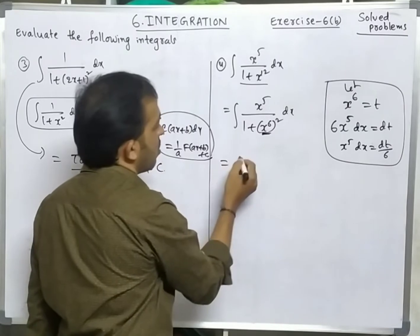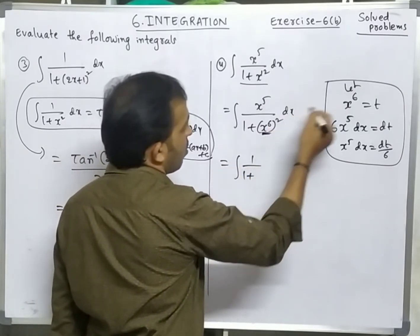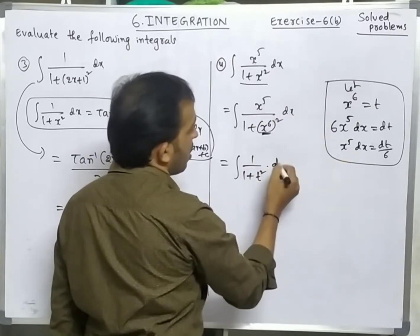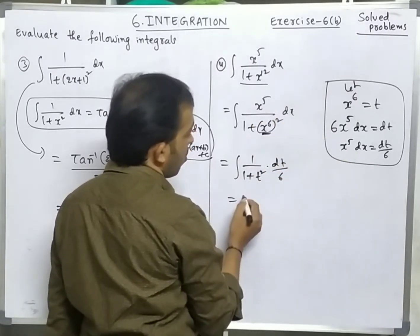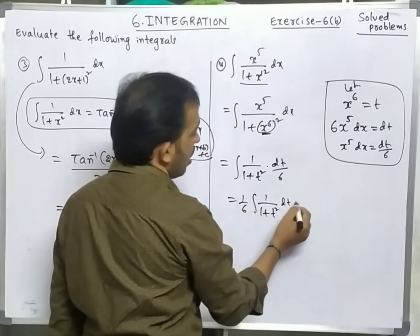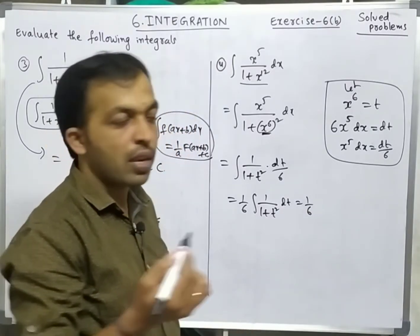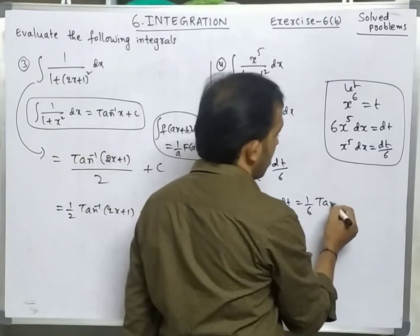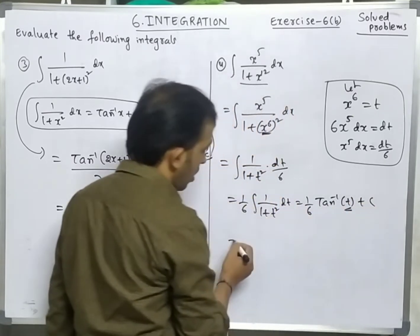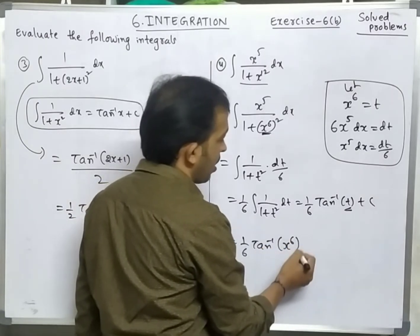Substituting: 1/(1+x⁶)² = 1/(1+t²), and x⁵ dx = dt/6. So we get (1/6)·integration of 1/(1+t²) dt = (1/6)·tan⁻¹t. Now substitute back the value of t: the answer is (1/6)·tan⁻¹(x⁶) + c.